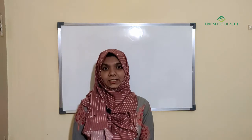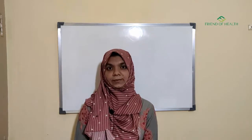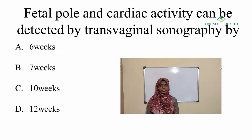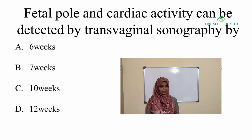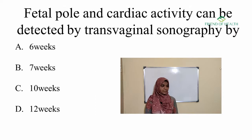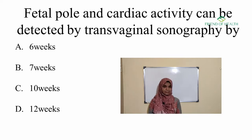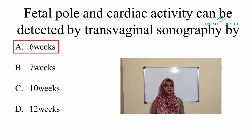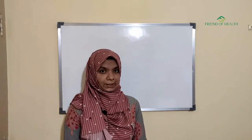Welcome back to Friend of Health. Today we continue with obstetrics and gynecology questions from the 2019 AIPGET question paper. The first question is: fetal pole and cardiac activity can be detected by transvaginal sonography by — option A: 6 weeks, B: 7 weeks, C: 10 weeks, D: 12 weeks. The answer is 6 weeks.